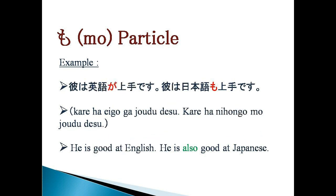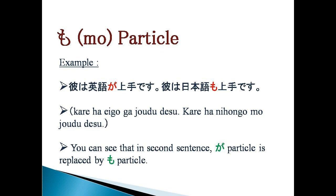Let's see one more example. KHAREWA EGO GA JOJU DESU. KHAREWA NIHONGO MO JOJU DESU. This means 'He is good at English. He is also good at Japanese.' In the second sentence, we have replaced the GA particle with the MO particle, and it gives the meaning of 'also.'